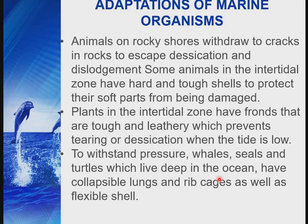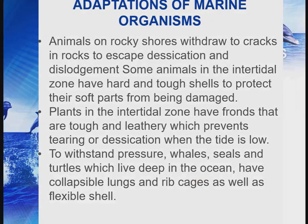Different organisms in different habitats have different adaptive features. For a food chain in a marine habitat: phytoplankton → zooplankton → mackerel → tuna. Another example: diatoms → zooplankton → crayfish → tilapia → shark. These are examples of food chains in the marine habitat.